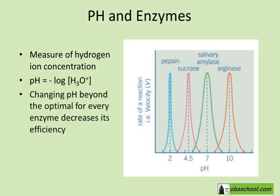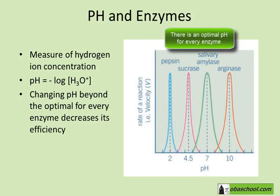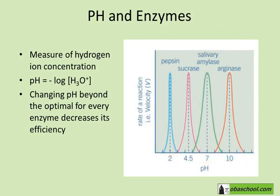Inside our bodies, every enzyme has a specific optimal pH. And if you change from this optimal pH — whether you go more basic by increasing the pH, or more acidic by decreasing the pH — the further away from the optimal pH you go, the efficiency of this enzyme decreases.